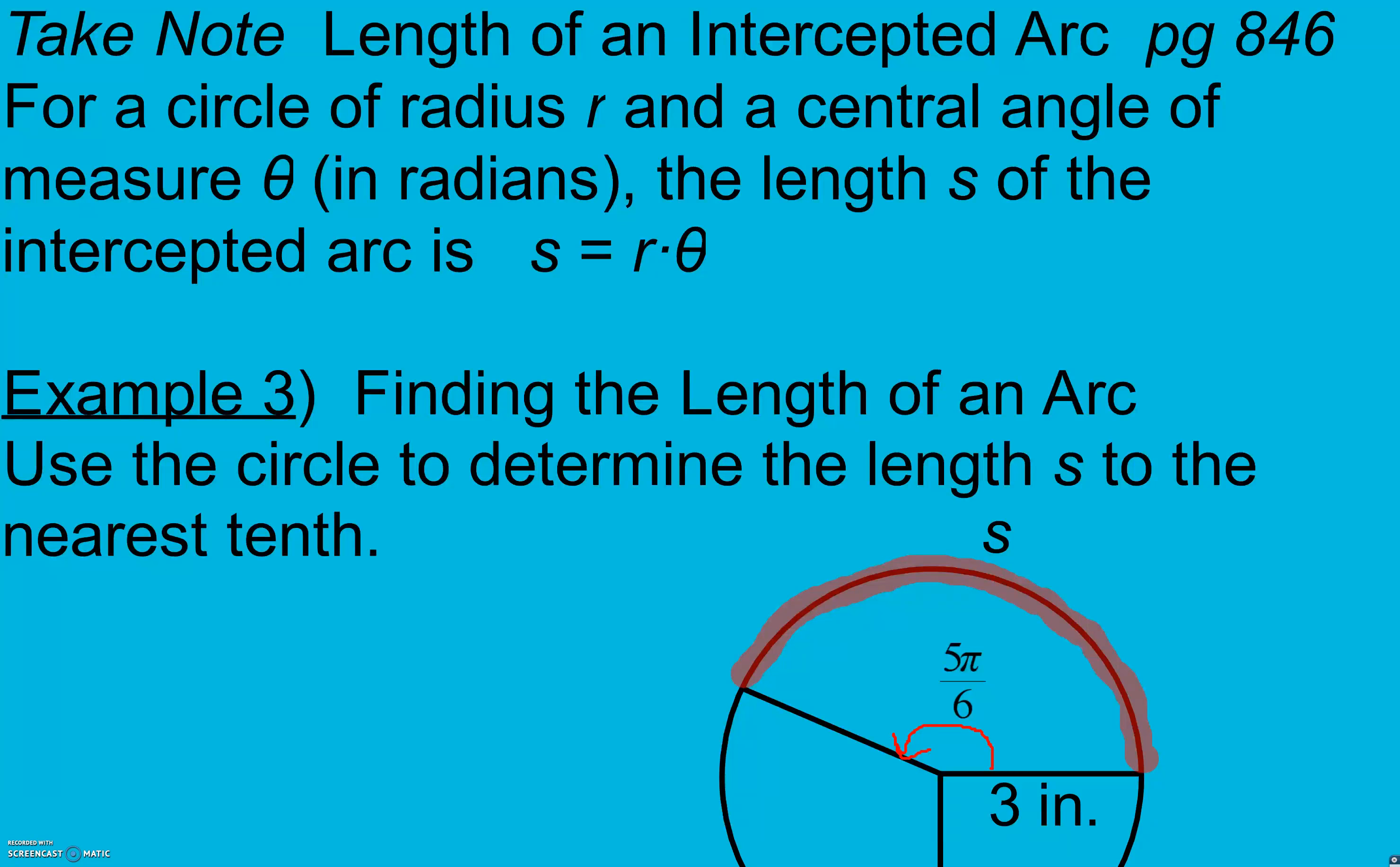Section 13.3 continued. Take note on page 846 is the length of the intercepted arc. For a circle of radius R and a central angle of measure theta in radians, the length S of the intercepted arc is R times theta.